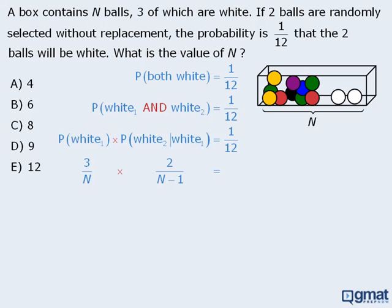When we set this equal to 1 twelfth, we see that we have an equation we can solve for N. First we'll simplify the left-hand side. Then we'll cross multiply, and simplify both sides.